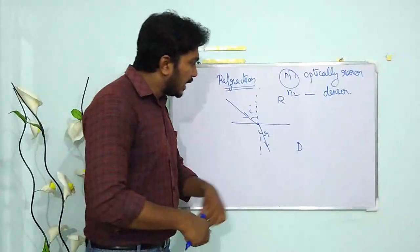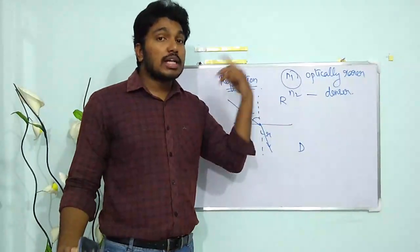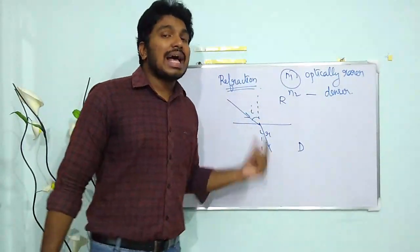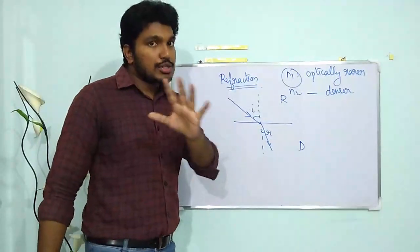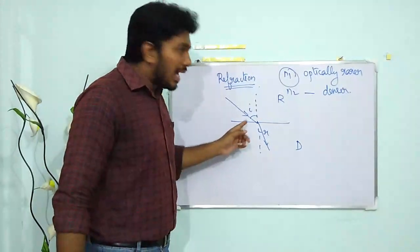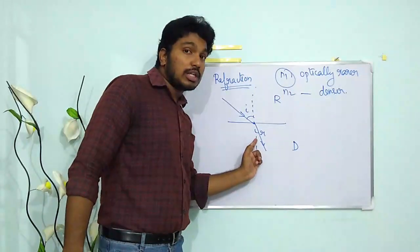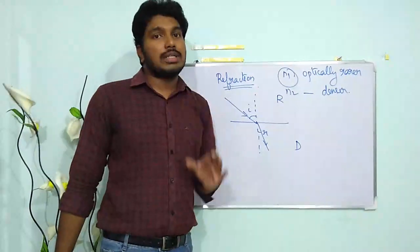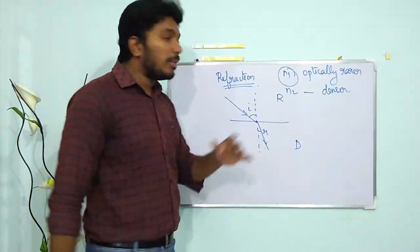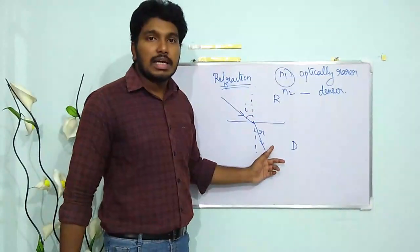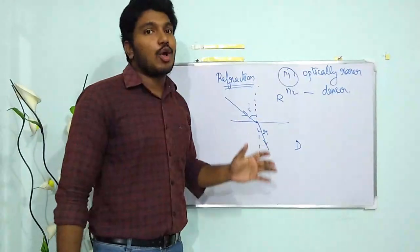Note that here r is the angle of refraction. For reflection I also used r, but since i equals r there that caused no issue. Here, i is the angle of incidence and r is the angle of refraction. So remember: when light moves from a rarer medium to a denser medium, it bends towards the normal.